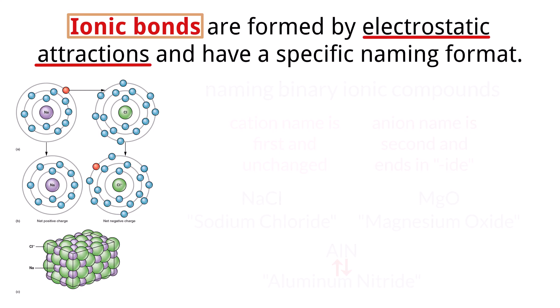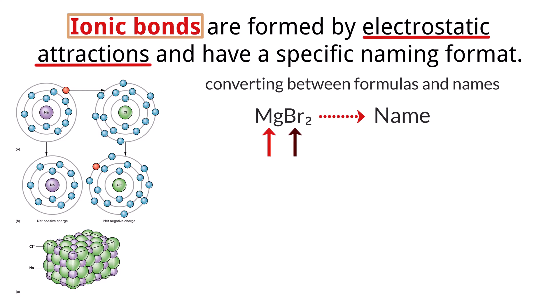Being able to interconvert between names and formulas of binary ionic compounds is very important, especially for the exam. For example, if you were given a formula like MgBr2, you need to be able to write the name of the compound. To do this, you first identify the cation, magnesium, and the anion, bromine. You then name the cation as is and change the ending of the anion to ide, resulting in magnesium bromide.